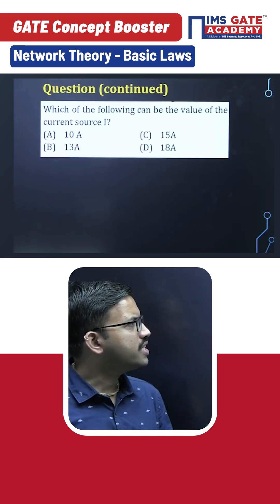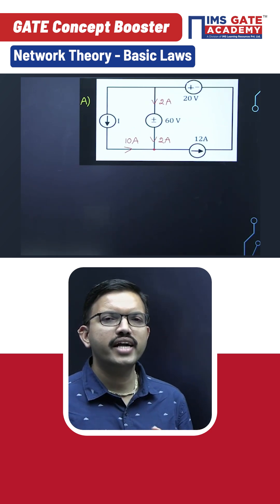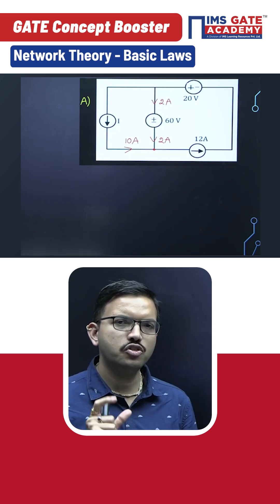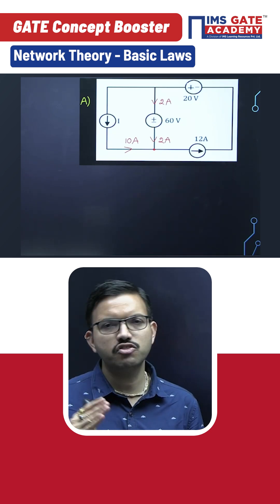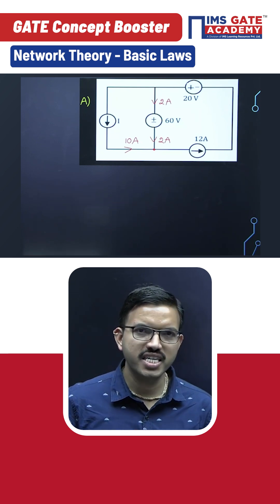Now with this understanding, when you consider option A, option A gives i value as 10 ampere and 2 ampere you can consider flowing through the 60 volt source. So 10 plus 2 is 12 ampere—the net amount of current, 12 ampere, is leaving in another branch. Yes, it is satisfied. Option A is the correct one.